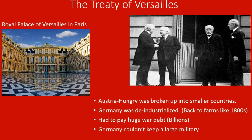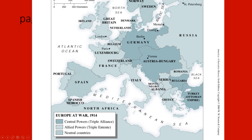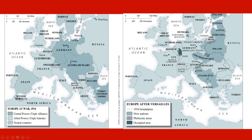World War I happened because of Archduke Ferdinand's assassination. If he had not been murdered, World War I would not have happened. If World War I had not happened, none of these things would have followed — Hitler never would have come to power, World War II never would have happened. Here is Europe before the war in 1914, and here is what it looked like after. You can see the changes side by side: Germany's broken up, Austria-Hungary's broken up. Poland comes out, Czechoslovakia — which would eventually be broken up into Czech and Slovakia. You can see the huge changes and how this all set the stage for World War II.